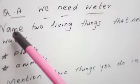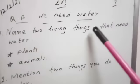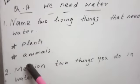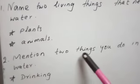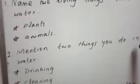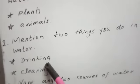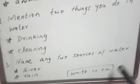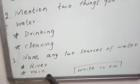Shall we read it again? Name two living things that need water: plants, animals. Mention two things you do in water: drinking and cleaning. Name any two sources of water: river and rain.